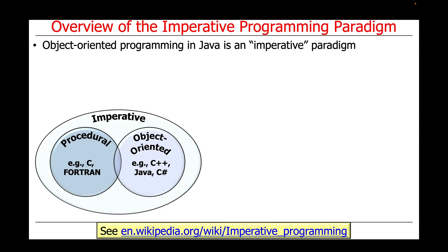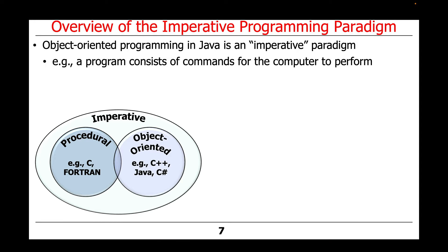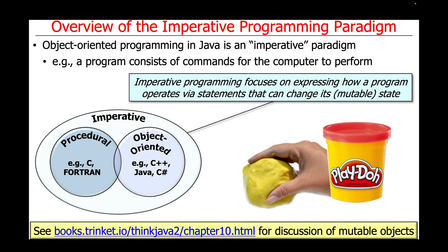As we mentioned earlier, object-oriented programming in Java is a so-called imperative approach. What that means is that a program consists of commands that the computer is to perform. Imperative programming focuses on expressing how a program operates by statements that can change its state, which is often referred to as mutable state. You can see the link at the bottom of the slides for more discussion about mutable state and mutable objects in Java.